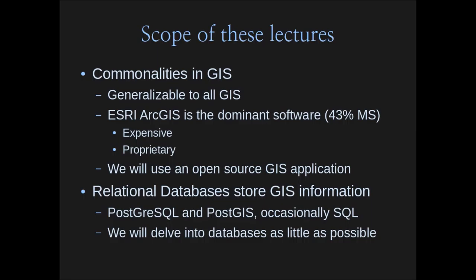Esri makes a product called ArcGIS. Someone told me back in 2005 to buy stock in Esri because they're taking over the world in GIS — and they kind of did. This is the dominant software with somewhere around 43% of the market share; the next one down has about 11%. However, it's expensive — it costs tens of thousands of dollars to get site-licensed here — and it's proprietary. So we are going to use an open source GIS application, which is probably the second most used after ArcGIS, along with another called GRASS GIS.